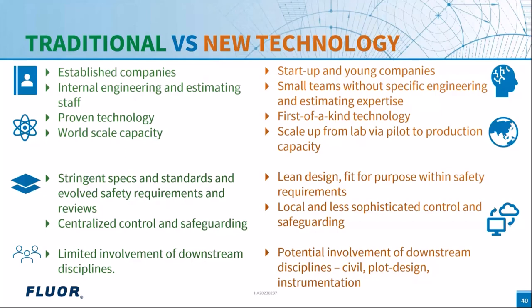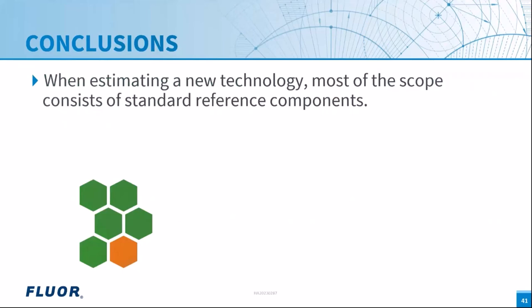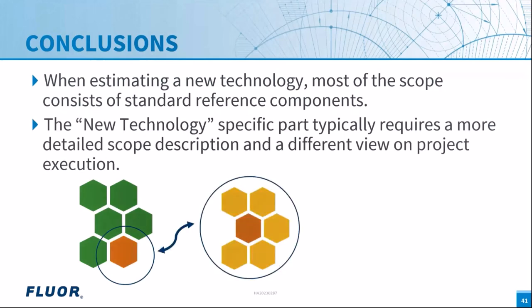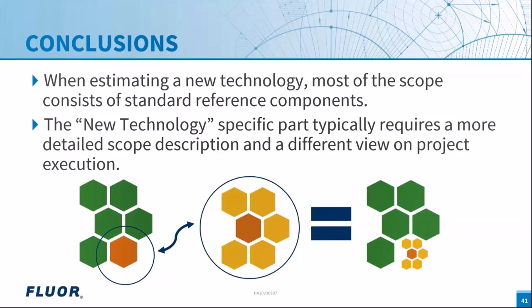In conclusion, when estimating a new technology, most of the scope consists of standard components — pumps, compressors, vessels — that we see in all our projects. The new technology-specific part requires a bit more attention and scope description to estimate accurately. But at the project level, only a smaller portion is truly affected by the novelty of the technology and the limited reference data. Back to David.